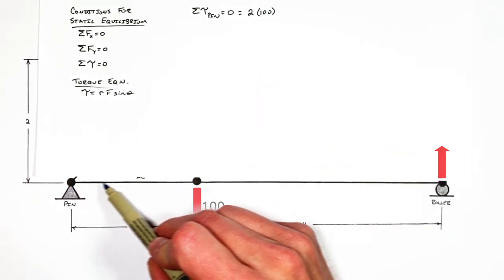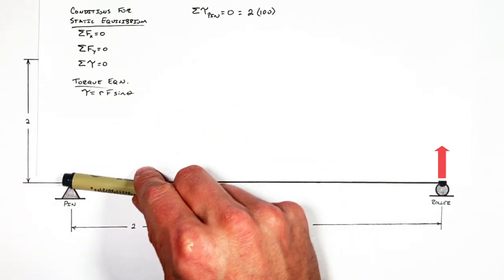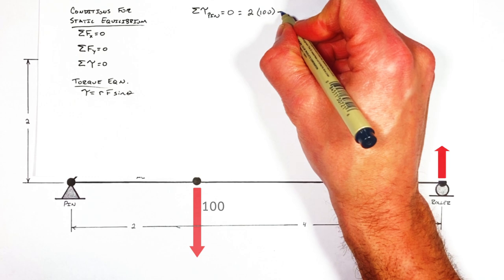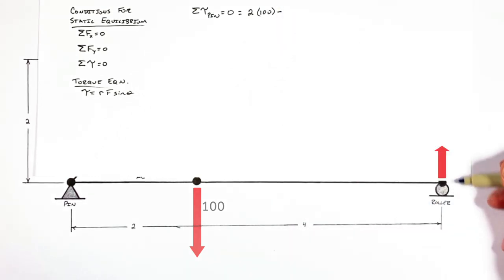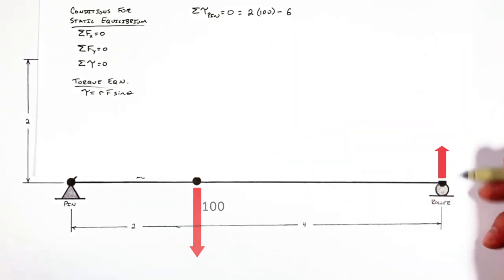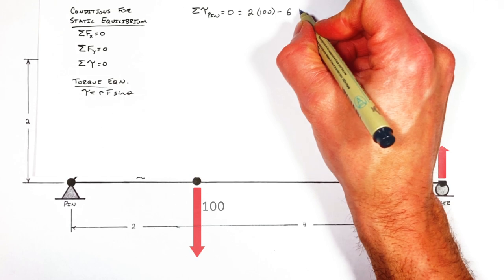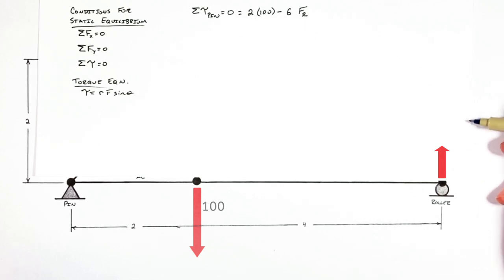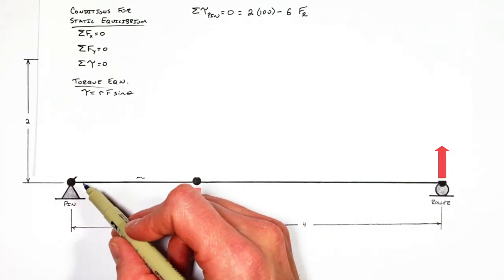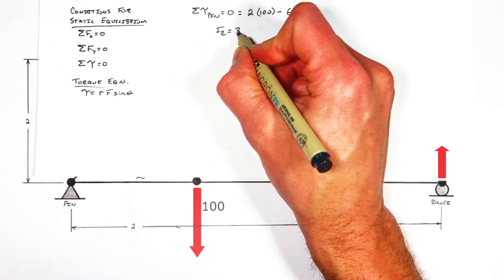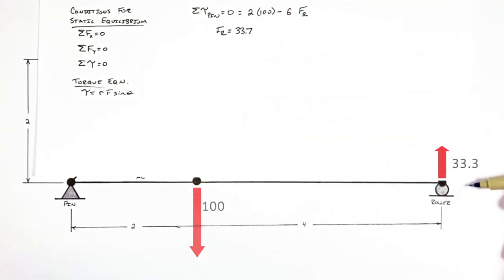That torque by the load is ultimately trying to make this whole beam rotate clockwise around the pin. Fighting that is the torque by the roller — in the negative direction, there's going to be some torque by the support over here. That reaction force is acting at a radius of six. We don't know the magnitude of that reaction force — I'll call it the force by the roller. That reaction force is upward, making it at a right angle to the radius vector, so the sine theta term doesn't matter. Solving for the force by the roller, we find it is 33.7.